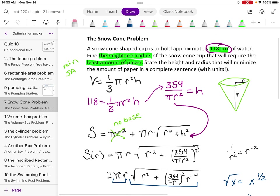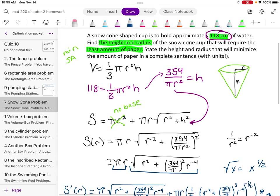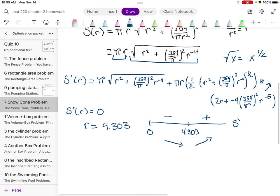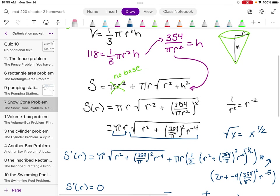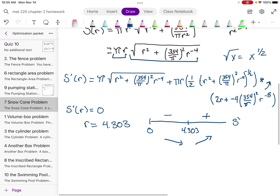Now, going back to the original problem, I'm asked for the height and radius that will minimize the amount of paper. So I need to take my r value and plug it back into this volume formula, since I know I have 118 cubic centimeters to find h.